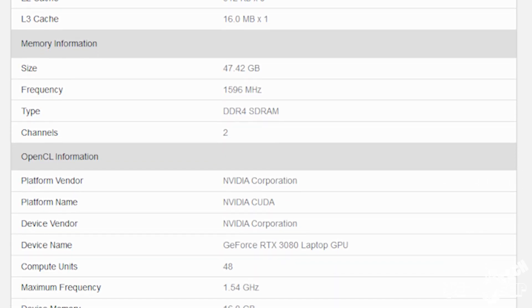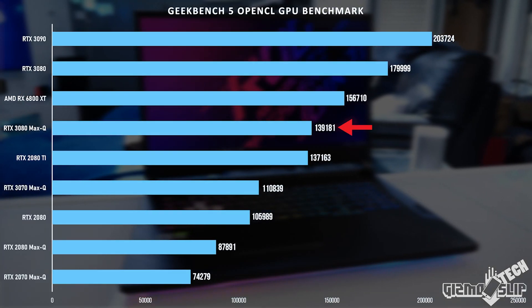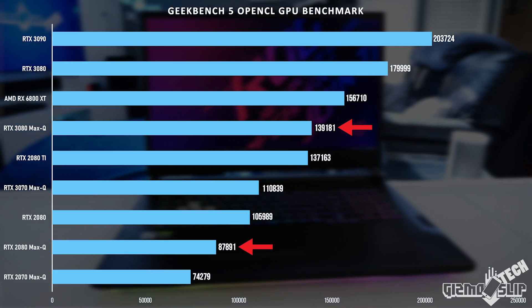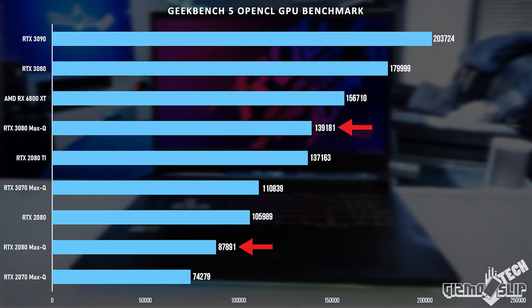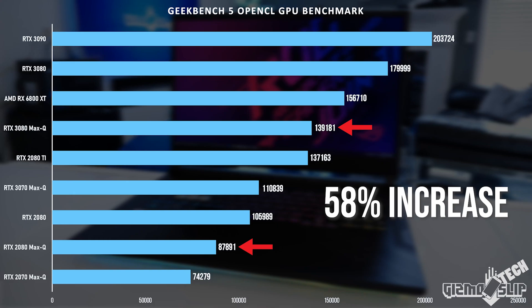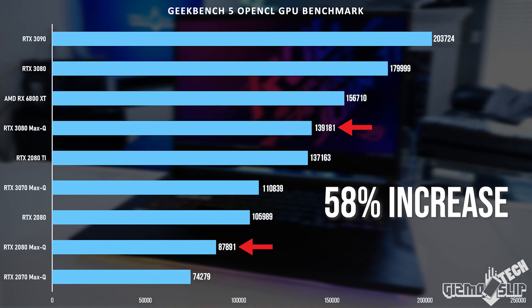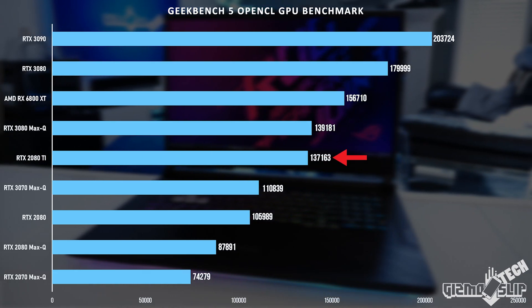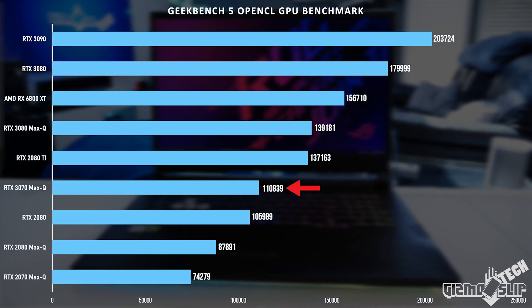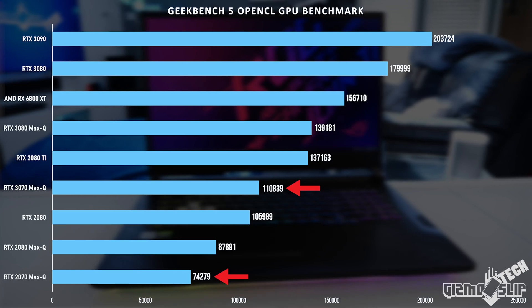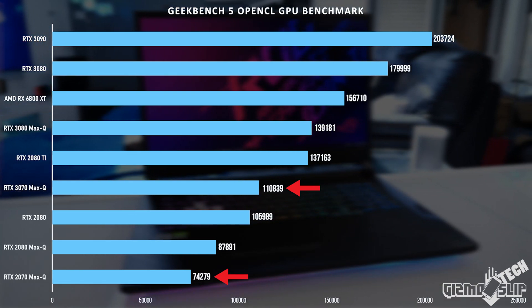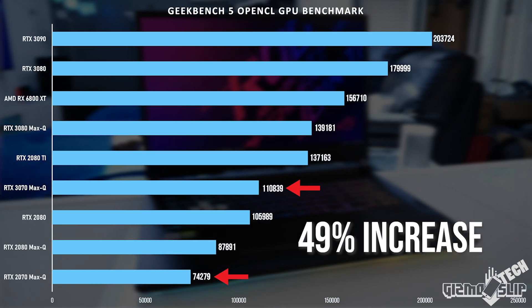It appears we have an authentic benchmark from Geekbench 5. The RTX 3080 Max-Q scored 139,000 points while an RTX 2080 Max-Q scored only 88,000 — that's a 58% increase in performance, which is enormous. If this benchmark is accurate, we're looking at more performance from a laptop RTX 3080 versus a desktop 2080 Ti. The RTX 3070 Max-Q got 111,000 versus 74,000 for the RTX 2070 Max-Q — a 49% gain, which is also pretty massive. And notably, this is a much bigger gap between the RTX 3070 and 3080 than there was in the previous generation.